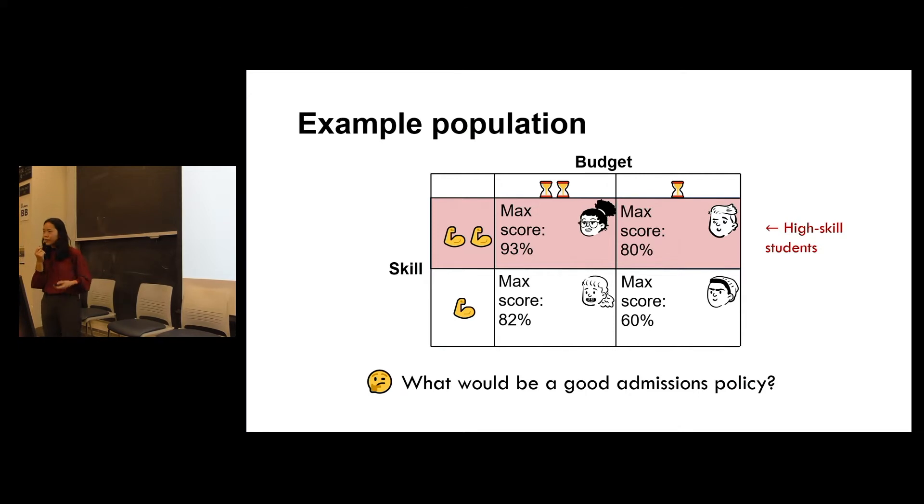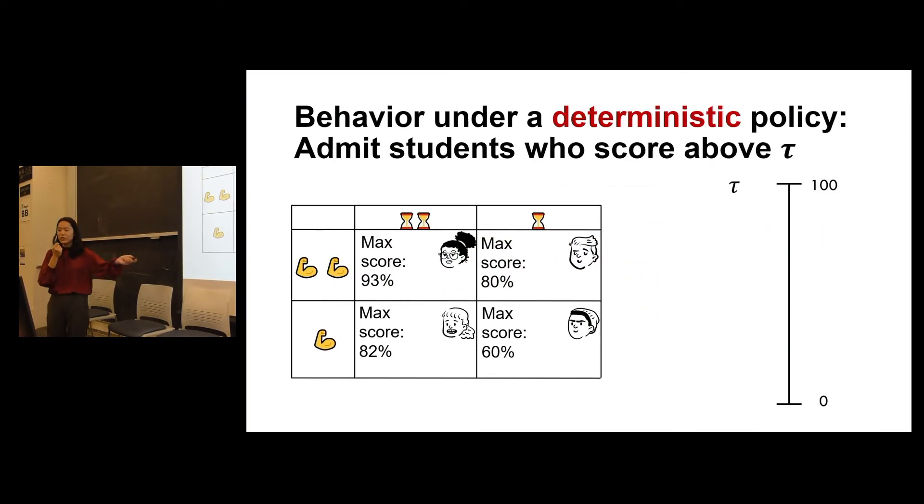You might be wondering, what would be a good admissions policy just for this simple toy example? For starters, let's just think about a deterministic admissions policy. Let's say we just admit students who score above a certain threshold tau. And let's just say for this first case, we want to admit the best of the best kind of students. So let's just say that we set our threshold to 90. In this case, only the student with the high skill and the high budget, that's the only student who will be able to exert effort to reach the threshold of 90.